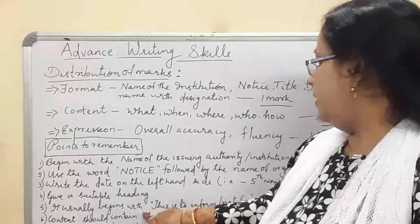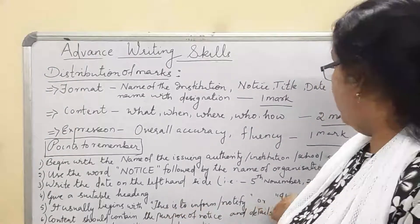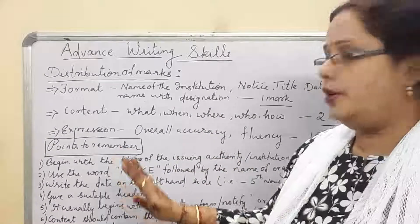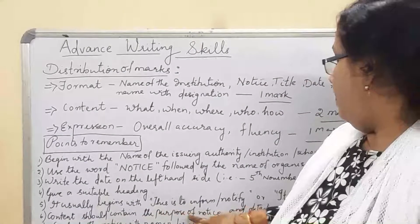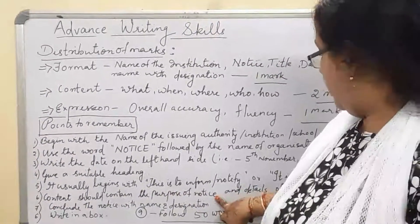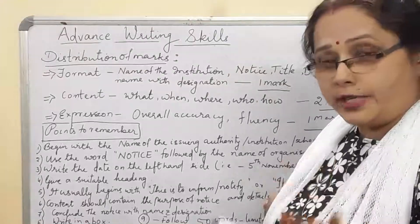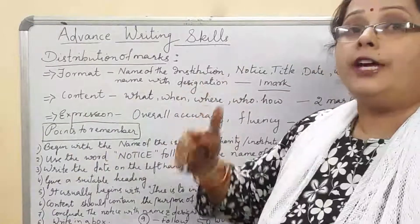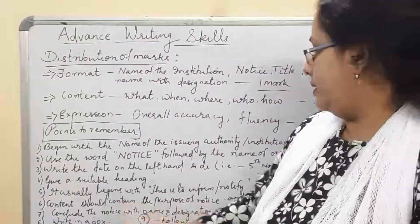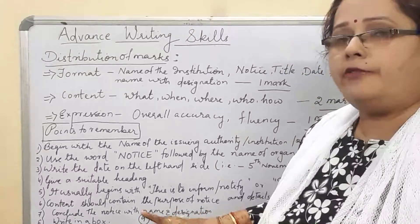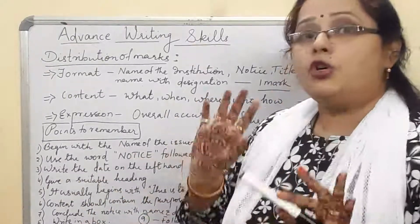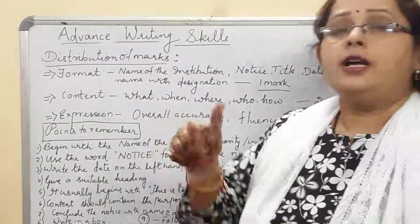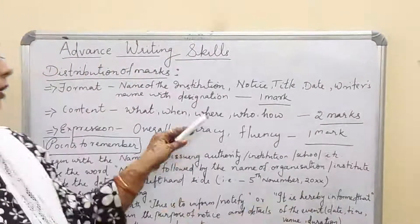Give a suitable heading. Your notice usually begins with 'It is hereby informed that' or 'This is to inform' or 'This is to notify that'. The content should contain the purpose of the notice, the details of the events — where it is organized, the time limit, duration, and how long it will continue. Conclude with the name and designation; if no name is given, write 'XYZ'. Make a box for the entire notice and maintain a word limit of 50 words.